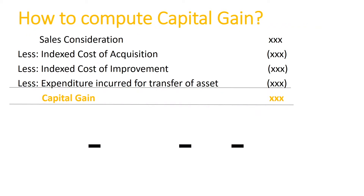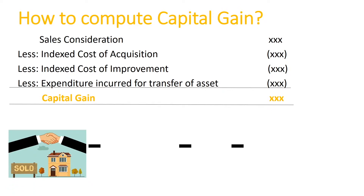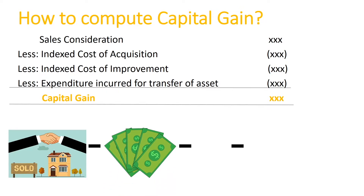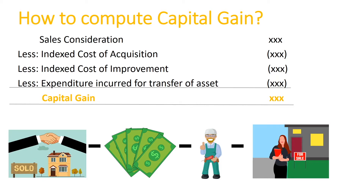Let's see how we compute long-term capital gain. Sales consideration is the amount you sold your asset for. Cost of acquisition is the amount you pay to purchase or construct your asset, including things like registration charges. Cost of improvement is the amount you spend on making material improvements to your asset — for example, in the case of a house, building another floor or adding another room. So next time you make this expenditure, don't throw the bills away. Any charges paid related to the sale of assets, like brokerage charges, are also included. We'll cover the indexation term in the formula in the later slides.